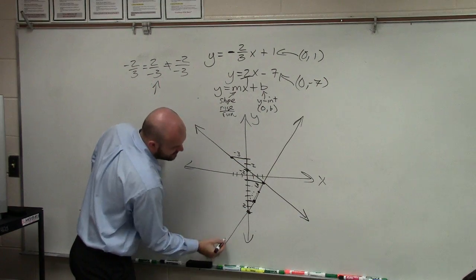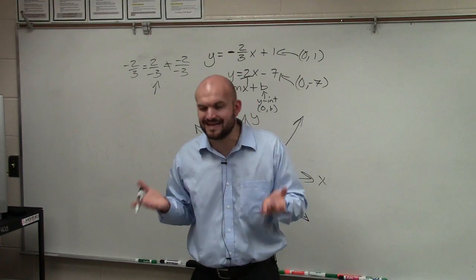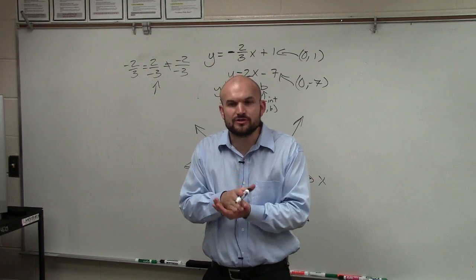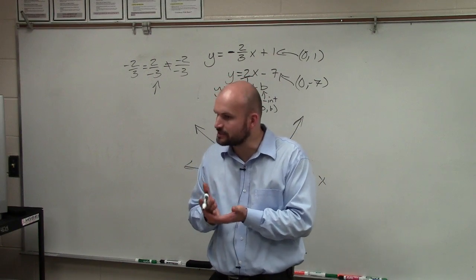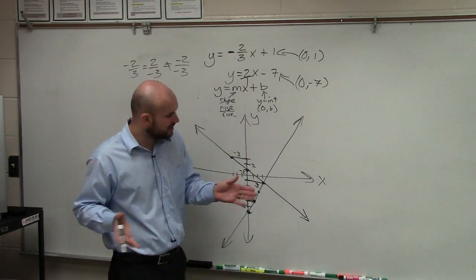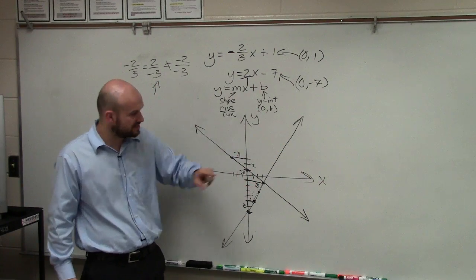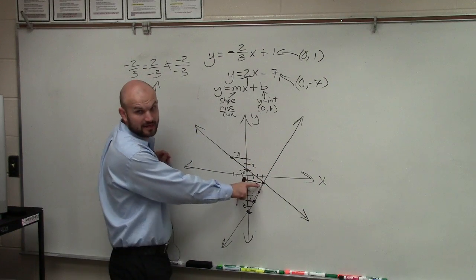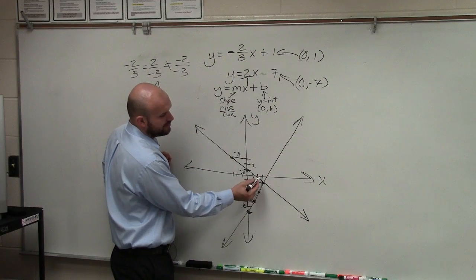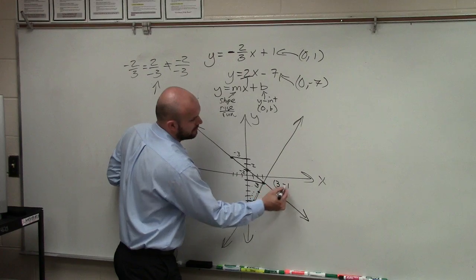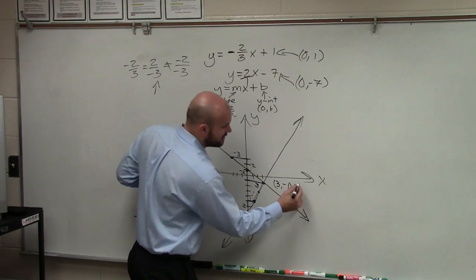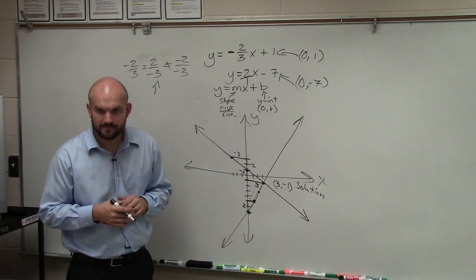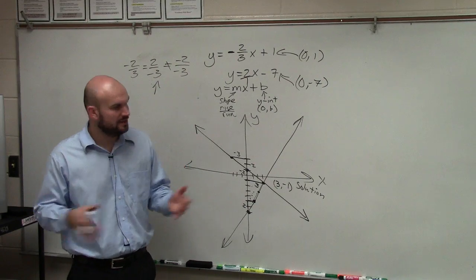The reason why I'm doing that is because the homework that you're doing is not graph two lines. That's not what the homework is. Your homework is to graph the system of equations and determine the solution. So the solution of a system of equations is when we have two or more equations, is where the two lines intersect. So you guys can see that they intersect at a point. That point is 1, 2, 3, negative 1. So when I ask you for the solution, that is the solution. The point where they intersect is the solution.